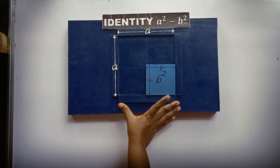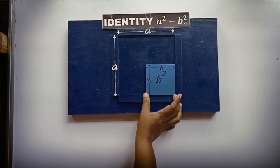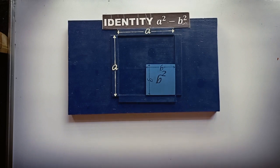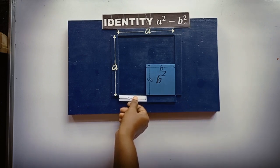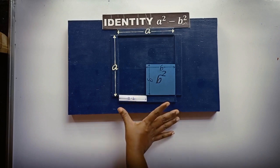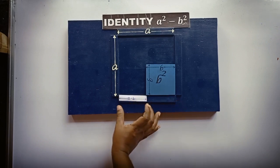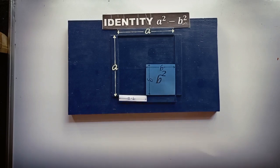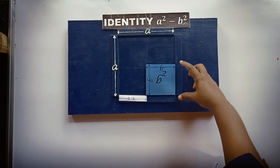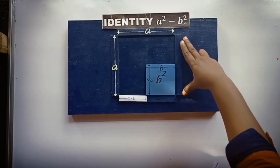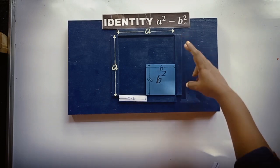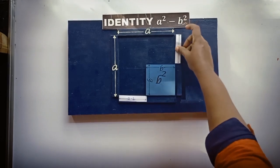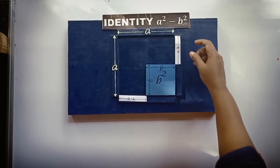Now, what is the remaining length? The whole length is A, and from that I removed a square of side length B. So the remaining side length is equal to A minus B. On the other side also, the whole length is A, and I removed B. So the remaining length is A minus B.